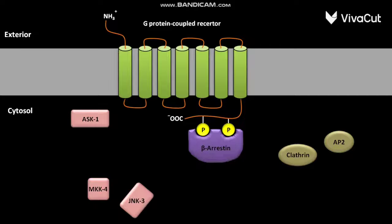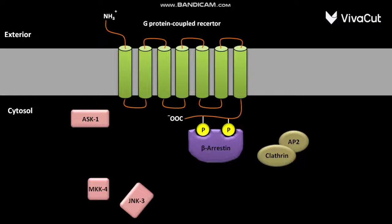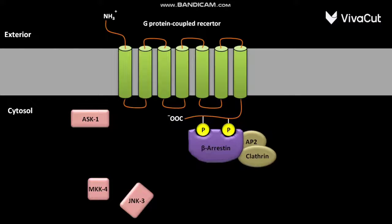Proteins like Clathrin and Eps15 then bind to the beta-arrestin. This binding promotes endocytosis of the G-protein coupled receptor.